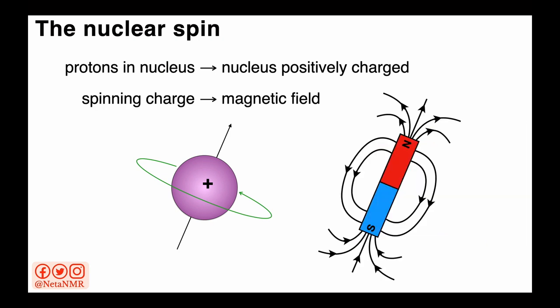These nuclei spin on their own axis. And the spinning charge creates a magnetic field. So these nuclear spins act like tiny bar magnets, as you can see on the right.